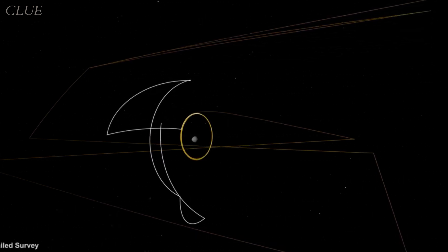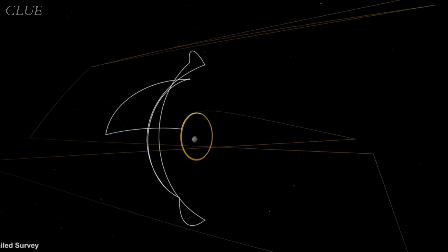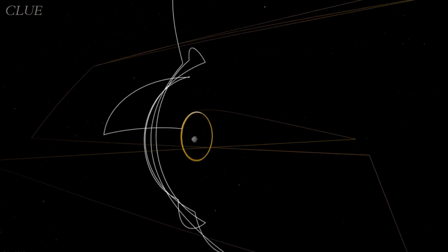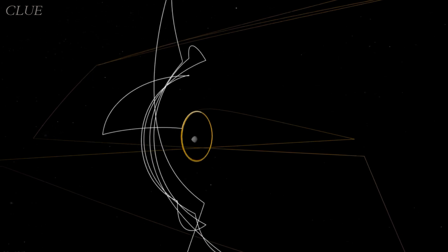Although Bennu was thought to be too small to host its own water, these hydroxyl groups suggested a connection to water from its parent body, long before Bennu had its cosmic split.